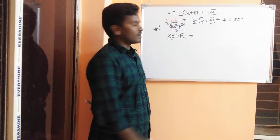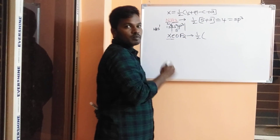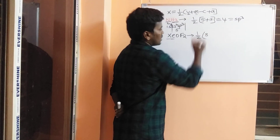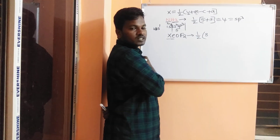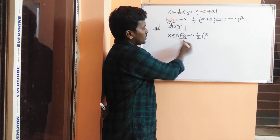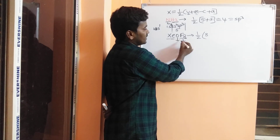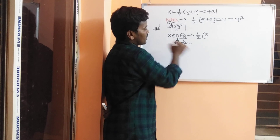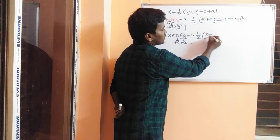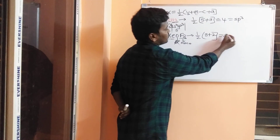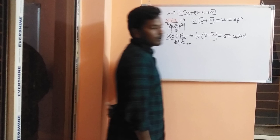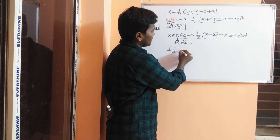Next example: XeOF₂ (xenon oxydifluoride). The central atom is xenon, which has 8 valence electrons, so V equals 8. For monovalent atoms: fluorine has atomic number 9 and a valence of one, so it is monovalent. Oxygen is divalent, so we do not count it. There are 2 fluorine atoms, so M equals 2. One by two of (8 + 2) equals 5, giving sp³d hybridization.